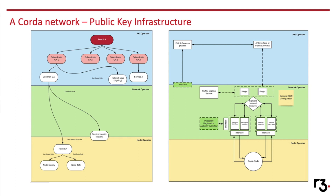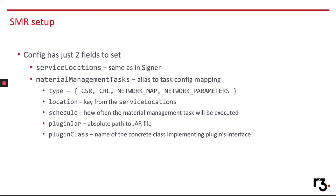As you can see in this deployment, as opposed to the previous one, you will be able to configure an optional service that we call Signable Material Retriever, which together with a plugin allows you to deal with signing tasks occurring in your network and delegate the signing and issuance to a software, third-party provider, or even a process of your choice. Now let me hand it over to Ante for more details on how this feature works and a demo. The new service you need to set up is called the Signable Material Retriever, or shortly, SMR.